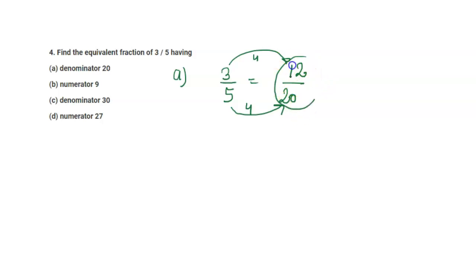So this is the fraction. Now in part B, the numerator is 9. So 3/5 equals 9 over what denominator? We see that 3 times 3 equals 9, and we multiply the same number with the denominator 5, so we get 15.